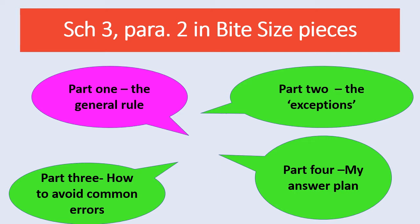In this video I'm going to take you through the first part of the statutory provision, the general rule, and in the second video I'll be looking at the exceptions to the general rule. In the third video I'll be pointing out some common mistakes students make and give you advice on how to avoid them. Finally in the fourth video I will take you through my plan to answer the sample exam question to show you how Schedule 3 paragraph 2 fits into a question on third party rights on registered title. Please watch all the videos in sequence as they are all linked.